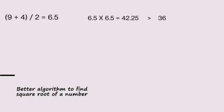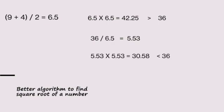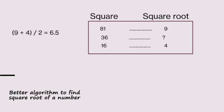If we use 6.5, the square is 42.25, which is greater than 36. Now the complementary value is 5.53. 5.53 squared is 30.58, it is less than 36. 6.5 squared is greater than 36, 5.53 squared is less than 36. We continue with the average. The average of 5.53 and 6.5.